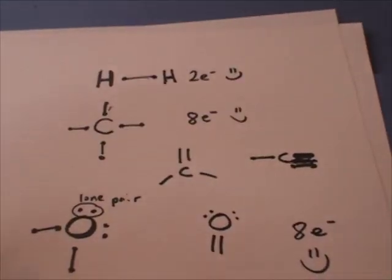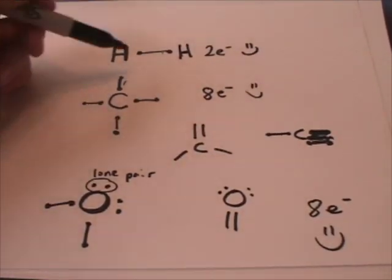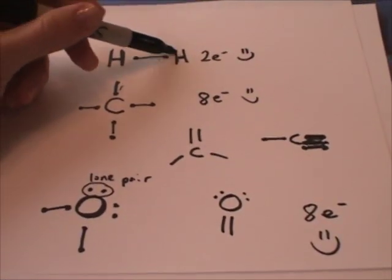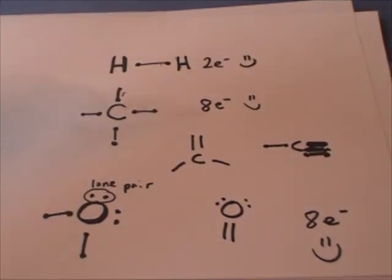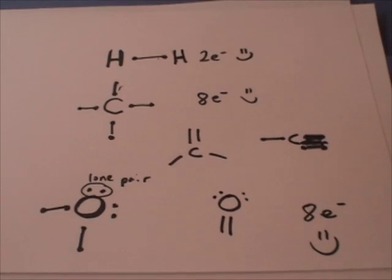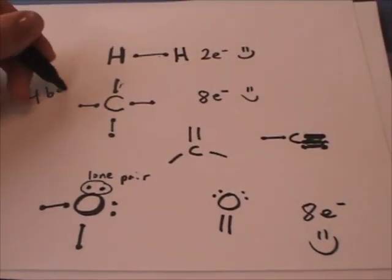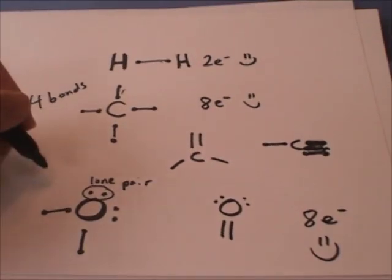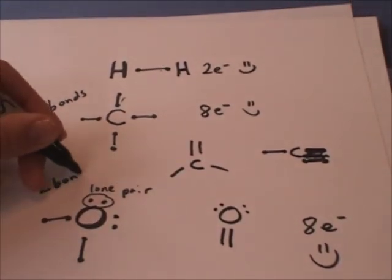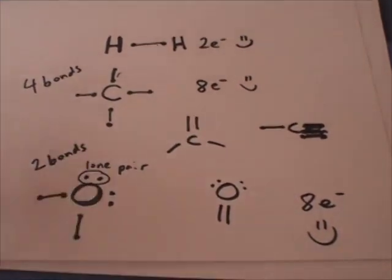So hydrogen wants to form one bond. It will be found on the outside of a molecule. You're not going to see hydrogen on the inside because that would mean that the hydrogen would have two bonds. And hydrogen can't form two bonds. It can only form one bond. Carbon will want to form these four bonds. Oxygen wants to form two bonds. And then there would be two lone pairs, giving it its valence of eight.